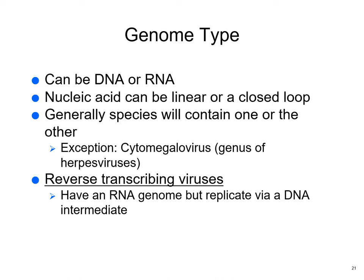The genome type can be either DNA or RNA. The nucleic acid will be linear or in a closed loop, depending on the virus. An exception is cytomegalovirus. Reverse-transcribing viruses have an RNA genome but replicate via a DNA intermediate — this is what HIV does. It's an RNA virus, but it causes your body to make a DNA copy, and then it produces the RNA virus.